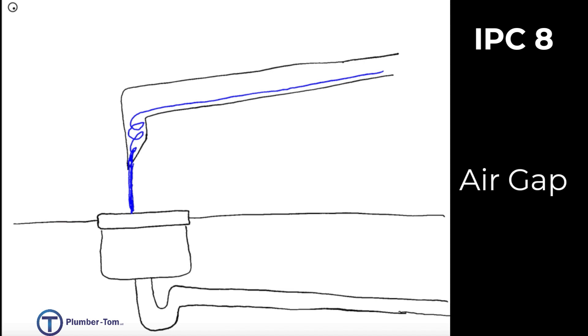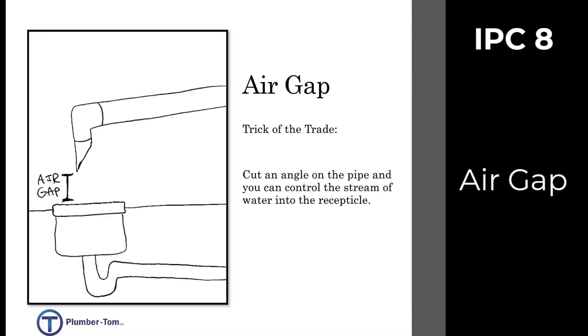You can control and direct that flow by just cutting an angle on the end of the pipe. There's a great trick of the trade. You should put this in your back pocket and remember if you're ever doing an air gap and especially if you're having trouble controlling the flow, just cut an angle on the end of that pipe, whatever kind of pipe you're dealing with. Make sure your air gap is the correct height above the receptor, but you should be able to control pretty well the water coming from that stream.